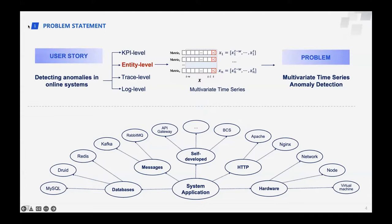The bottom half of the page shows entities deployed in an industrial environment. Taking a cloud server as an example, when detecting anomalies in cloud servers, we need to collect and monitor multiple metrics such as CPU usage, memory usage, and IO usage. In practice, we aggregate these metrics into multivariate time series and adopt multivariate time series anomaly detection approaches to detect anomalies in entities.